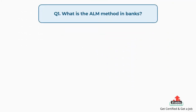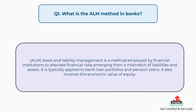Question number one: what is the asset and liability management method in banks? Asset and liability management is a method employed by financial institutions to alleviate financial risks emerging from a mismatch of liabilities and assets. It is typically applied to bank loan portfolios and pension plans, and also involves the economic value of equity.